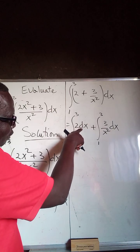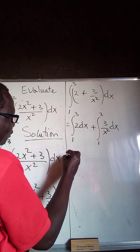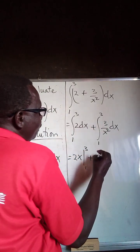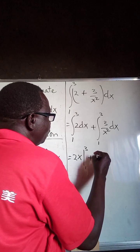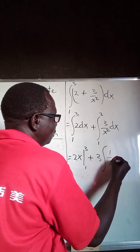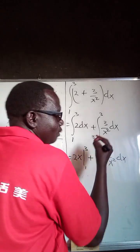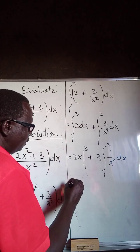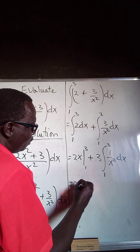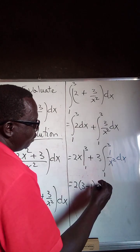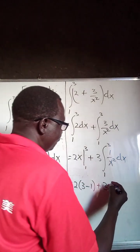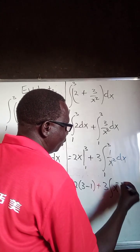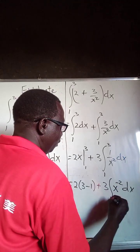Integrating 2 with respect to x gives 2x, evaluated from 1 to 3. Plus 3 is a constant, so we have 3 times the integral of 1 over x squared with respect to x, evaluated from 1 to 3. Using the power rule, the integral of x to the negative 2 is x to the negative 1 divided by negative 1.